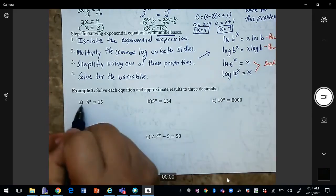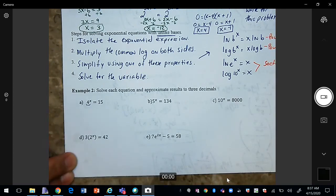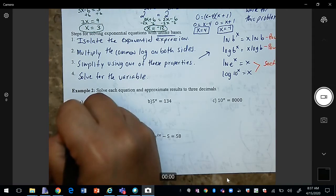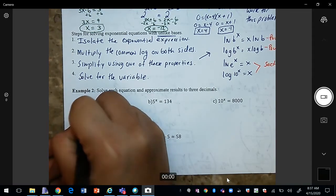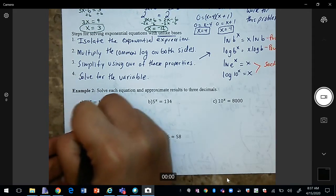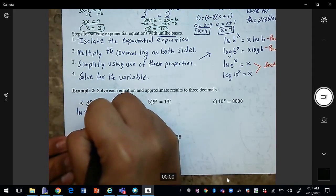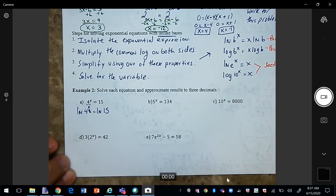So if you notice, this is my exponential part, and it is by itself. So we can go to step two, which is to multiply by the common logarithm, or you can multiply by the natural logarithm. So I'm going to go ahead and multiply by natural log of 4^x is equal to natural log of 15. So we have to multiply it on both sides.